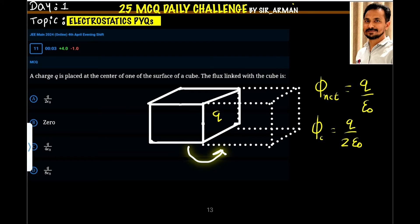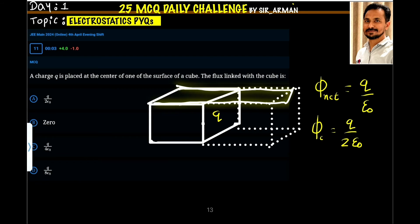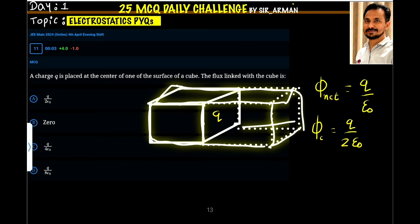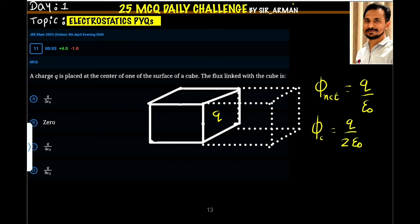Now the charge is lying inside a very big cube. Let us assume we have this large cube inside which the charge is lying. So the net flux is q by epsilon not (q/ε₀). Now this flux is divided between two small cubes.